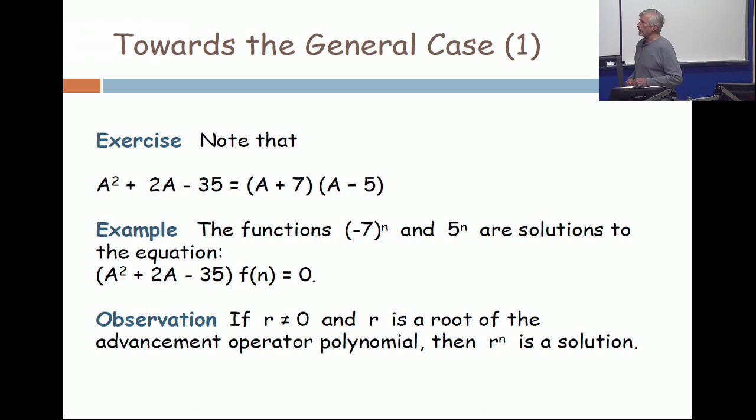And now you can see, if my general theorem is correct, what we've said is that if you take this operator equation, A squared plus 2A minus 35 on F of N is 0, the solution space is supposed to be a two-dimensional vector space because the degree of the polynomial is 2. And I have found two solutions, minus 7 to the N and 5 to the N.